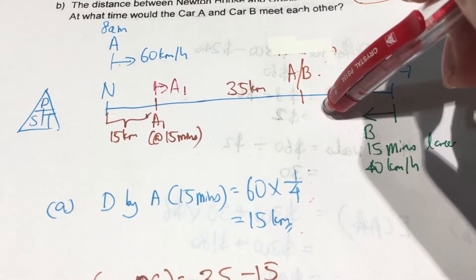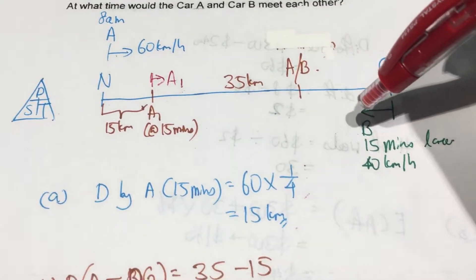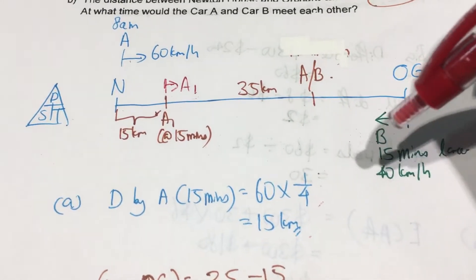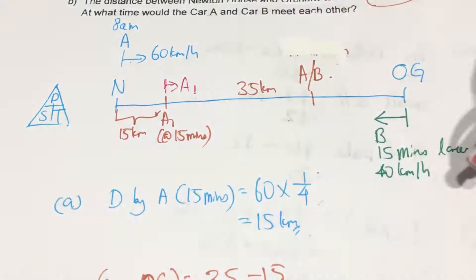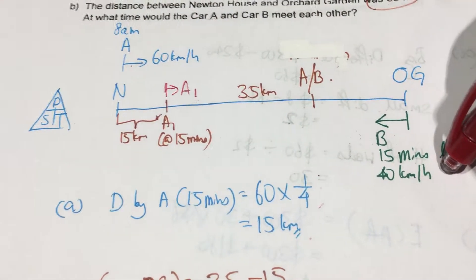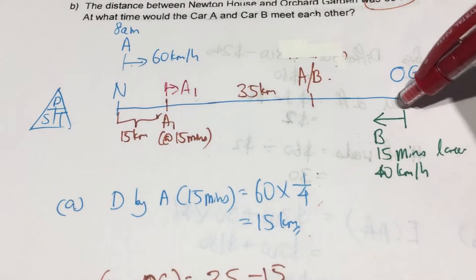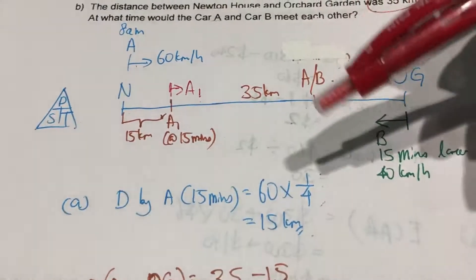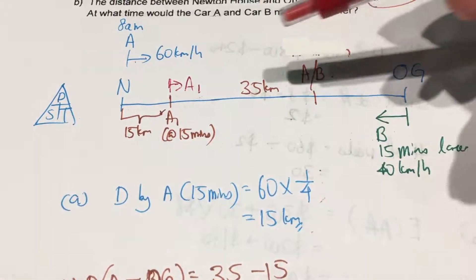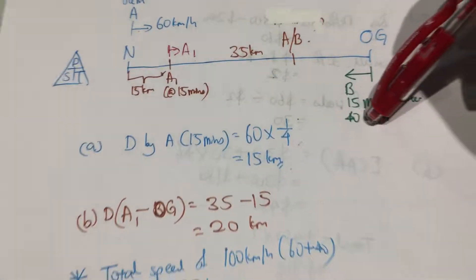We can imagine car A and B traveling together. And they are traveling at 60 plus 40km per hour, which is 100km per hour. And they are traveling together to cover this remaining distance. So this is how we can visualize and add 60 to 40.